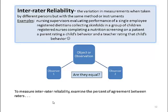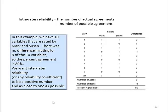To measure inter-rater reliability, we examine the percent of agreement between raters. Here's an example: we have ten variables rated by two judges, Mark and Susan. There was no difference in rating for eight of the ten variables, so we say the percent agreement is 80%. We want inter-rater reliability, or any reliability coefficient, to be a positive number and as close to one as possible. So we say we have a pretty good tool here in terms of inter-rater reliability.